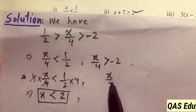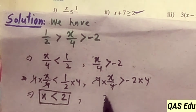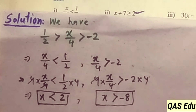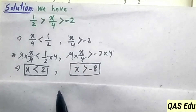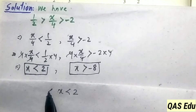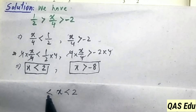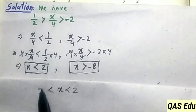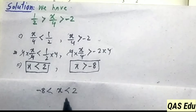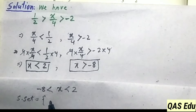For the second part, multiply both sides by 4: 4 cancels, giving x is greater than minus 8. Combining both results, we have x is less than 2 and x is greater than minus 8. The combined inequality is minus 8 less than x less than 2.